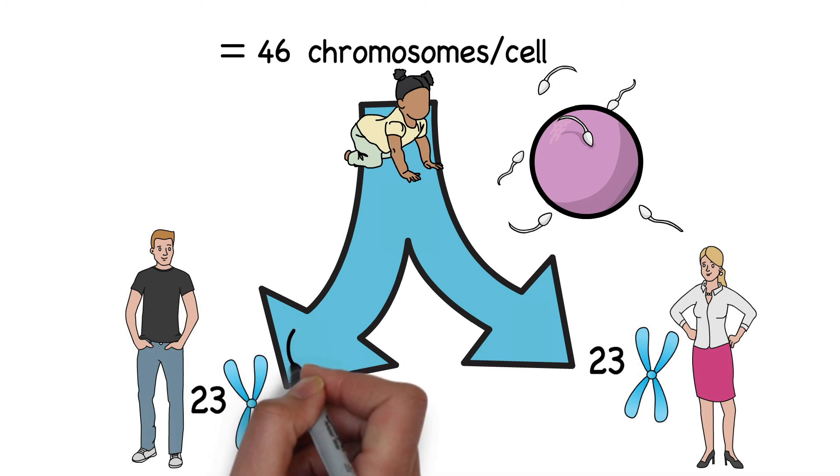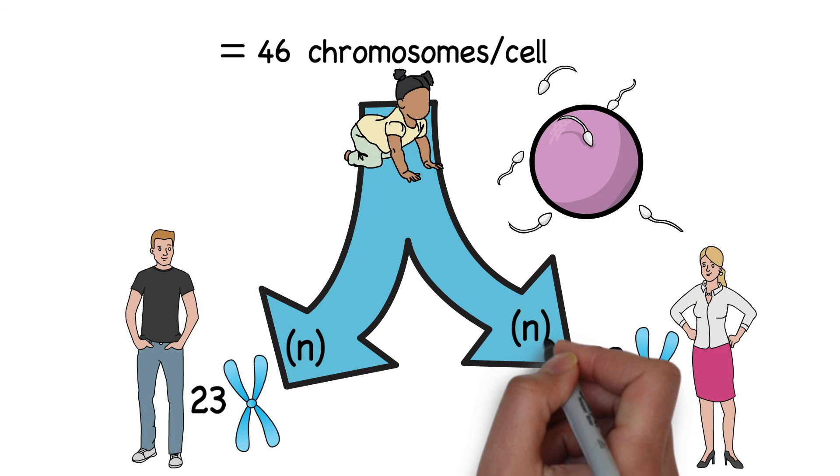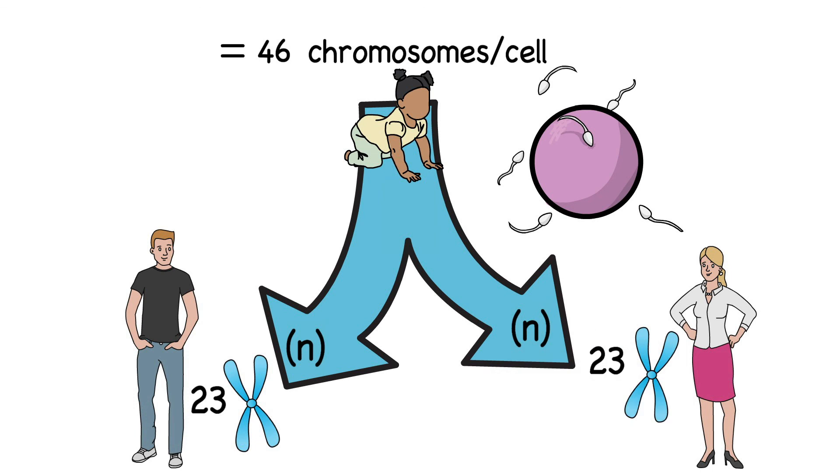The gametes, since they have half the number of chromosomes, are called as haploid cells, while the baby has diploid number of cells.